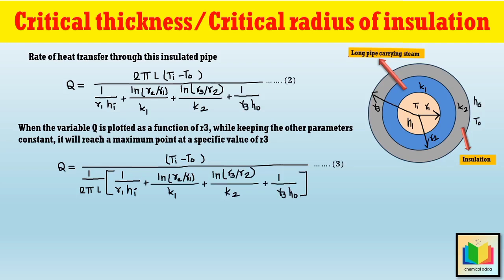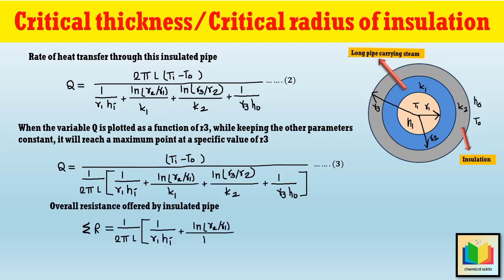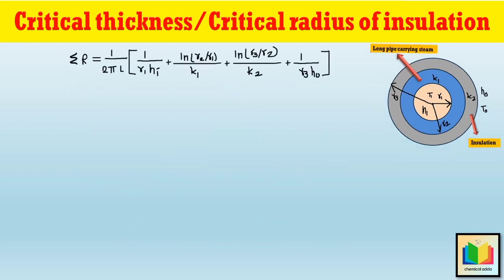The denominator of the heat transfer equation represents the overall resistance ΣR of the insulated pipe: ΣR = (1/2πL) · [1/(r1·hi) + ln(r2/r1)/k1 + ln(r3/r2)/k2 + 1/(r3·ho)]. To find the critical thickness, we minimize this denominator with respect to r3. The numerator, containing Ti and To, is held constant since it does not depend on insulation thickness. We differentiate ΣR with respect to r3.